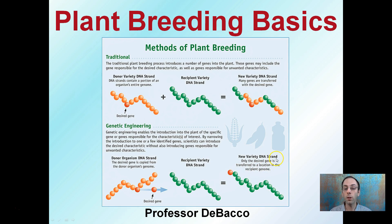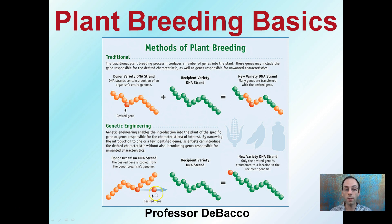Genetic engineering is still breeding, because you are still producing a new individual, but in this case it's very directed, only producing that desired gene being transferred at one time. Traditional breeding is where many genes are transferred, and the hope is that the desired gene will carry over — but there's also going to be some other carryover. Genetic engineering takes just that desired gene and only inserts that one.